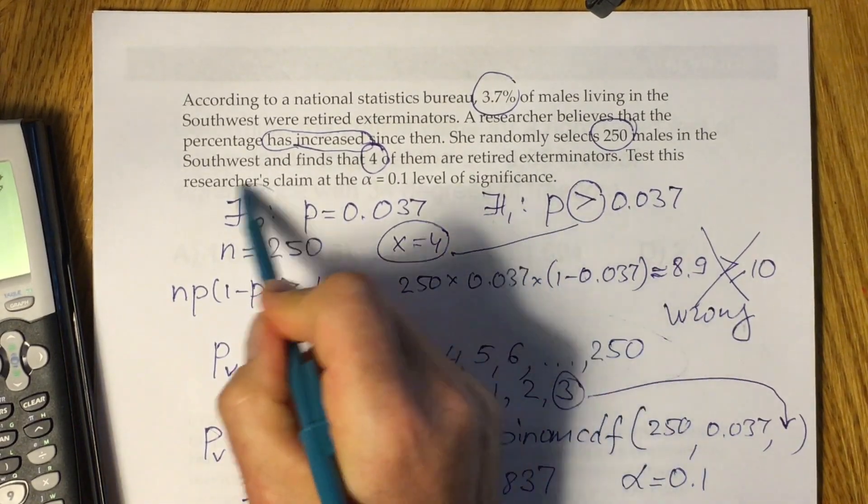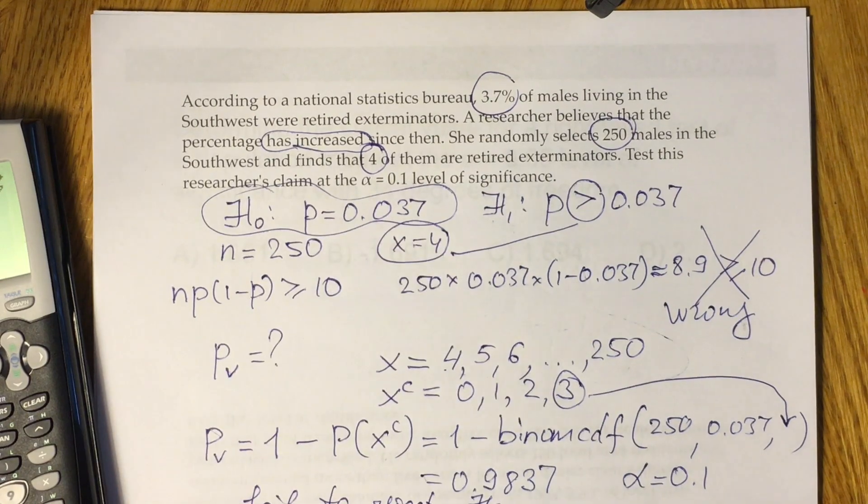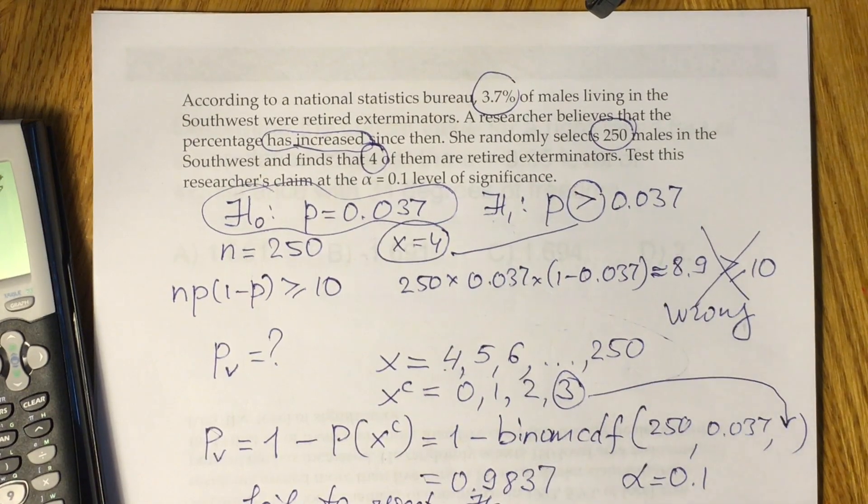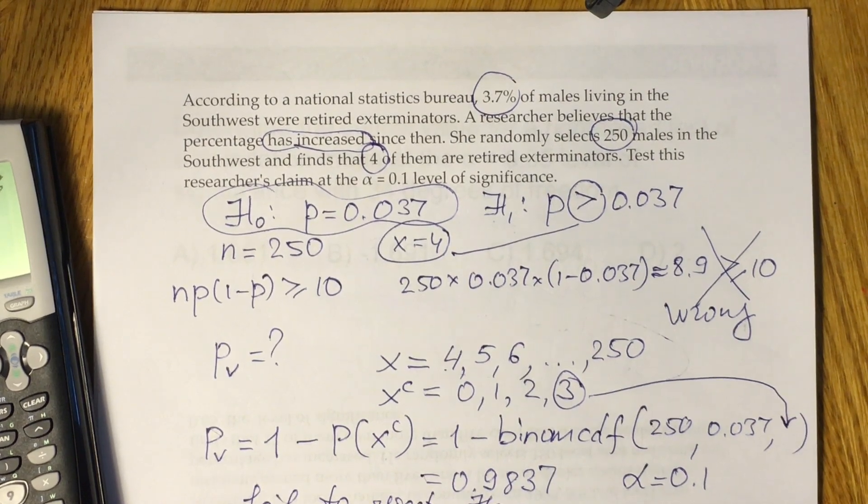So essentially, it means that we still remain with the null hypothesis, and it means that the number of exterminators retired in our area actually did not change since the time when it was 3.7%. We did solve the problem.